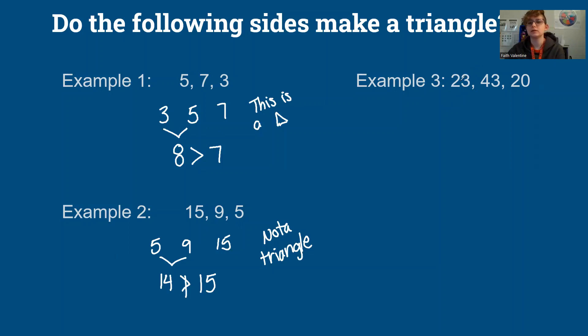Last one. We have 20, 23, and 43. We're going to add 20 and 23 and get 43. So is 43 greater than 43. This can trip some people up. It has to be greater than. So 43 is not greater than 43. So this is not a triangle.